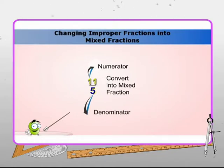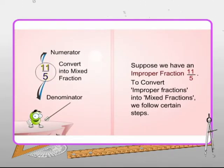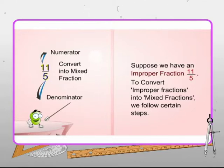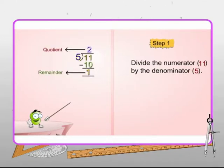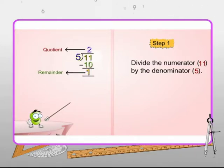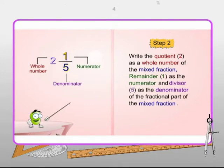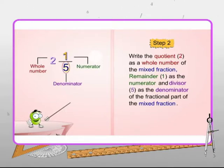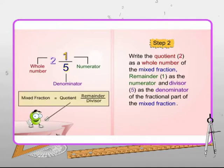You'll learn how to convert improper fractions into mixed fractions. Suppose we have an improper fraction 11 by 5. To convert this into a mixed fraction, follow these steps. In step one, divide the numerator, that is 11, by the denominator, that is 5. On dividing 11 by 5, we obtain 2 as the quotient and 1 as the remainder. In step two, write the quotient, that is 2, as the whole number of the mixed fraction; the remainder, that is 1, as the numerator; and 5, which is the divisor, as the denominator of the fractional part of the mixed fraction.